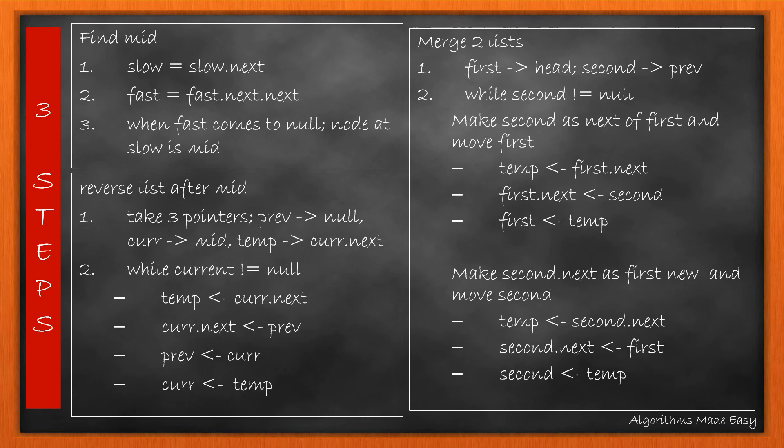The algorithm can be divided into three steps. The first step being finding the mid using two pointers. The second step involves reversing the list nodes appearing after the mid. Here, we use three variables: previous, current, and temp.